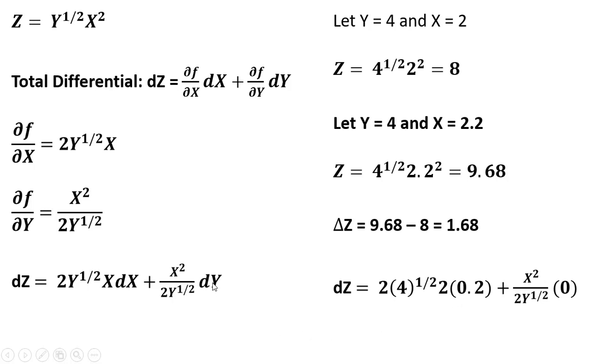And then the second part of this total differential, again, we're going to evaluate x at our original value and y at our original value. I'm not even putting these in here because the change in y, what is the change in y? It's 0. Y doesn't change in this problem. Y equals 4 and then we also let y equal 4 again. So that's just going to be all multiplied by 0.